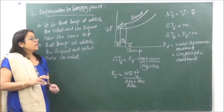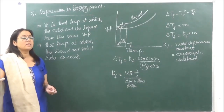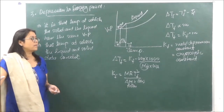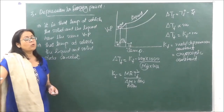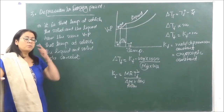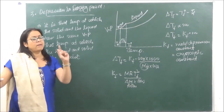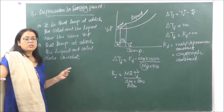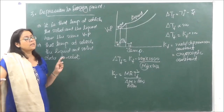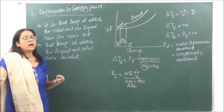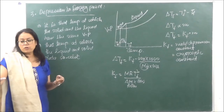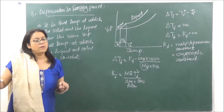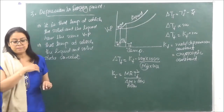From this section, definitely one numerical question will come in CBSE — almost 110% guaranteed. The HPE board also has a numerical from colligative properties, although it may be slightly easier. In the next lecture, after doing questions, we will finish the chapter with the remaining property: osmotic pressure and van't Hoff factor.